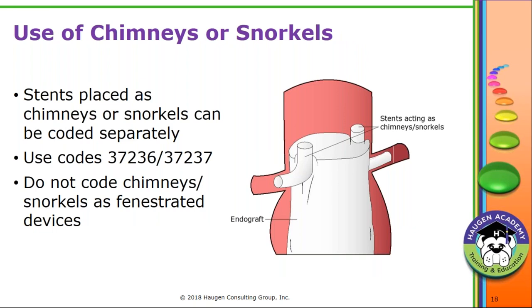Chimneys or snorkels are regular stents used when a device covers another artery to maintain blood flow. They are coded with 37236 or 37237 and can be reported separately. Do not use the fenestrated device codes for chimneys/snorkels. They are most commonly placed into renal, visceral, or iliac arteries when the endograft covers those vessels.